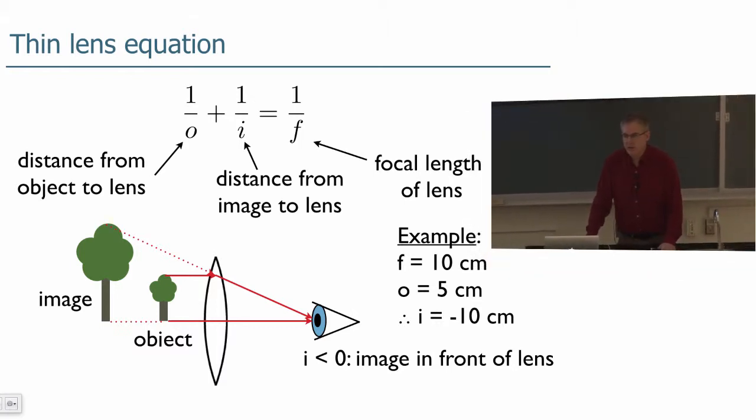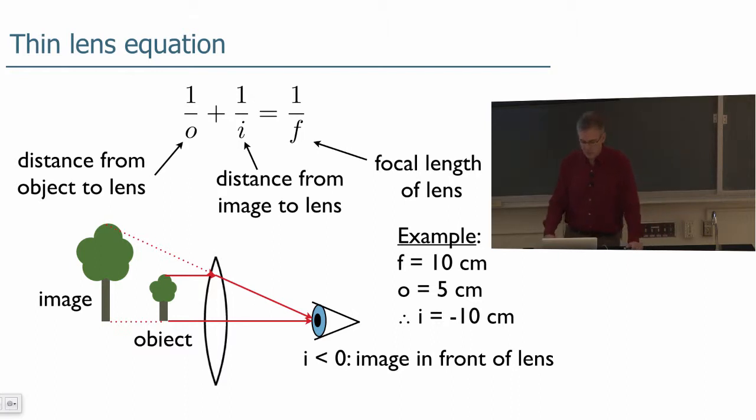To do this calculation, we won't derive this equation. You could actually derive it geometrically using just using rulers and so forth. But we'll just declare that the thin lens equation is 1 over O plus 1 over I equals 1 over F. Where O is the distance from the object to the lens.